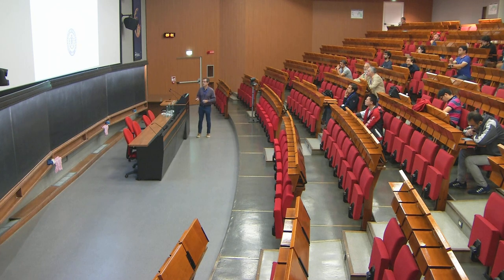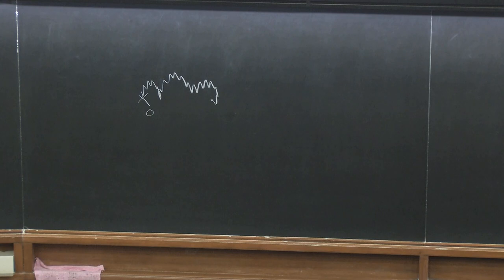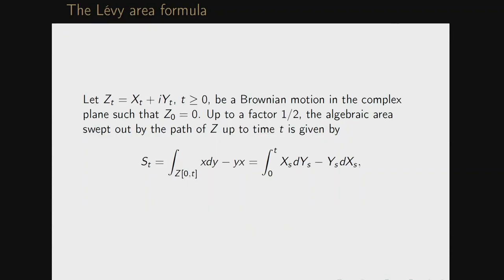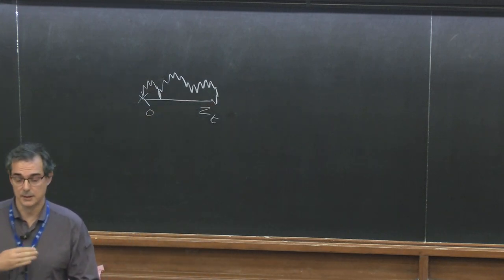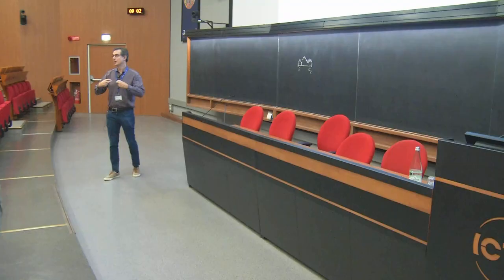We are interested in simple functionals related to Brownian motion. Consider a Brownian motion in the complex plane started from zero — this is a continuous analog of two-dimensional random walks. We are interested in a basic functional of the path: the area swept out by zt up to time t. Specifically, I am looking at the algebraic area, meaning it can take possibly negative values. Loops are counted differently according to orientation.